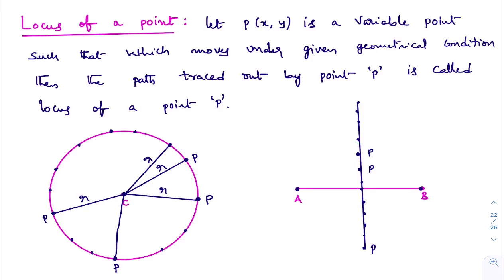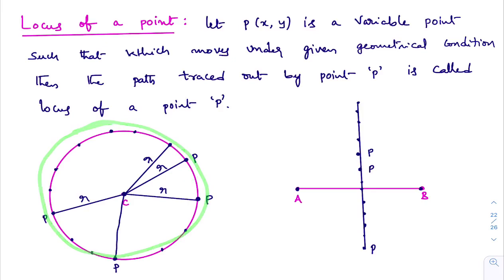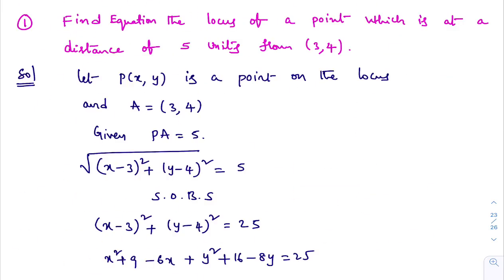Now we are going to do problems on finding the equation of a locus. Finding equation of a locus means — in the circle example we are finding the equation of a circle, and in the straight line example we are finding the equation of a straight line. Let's see the first example.